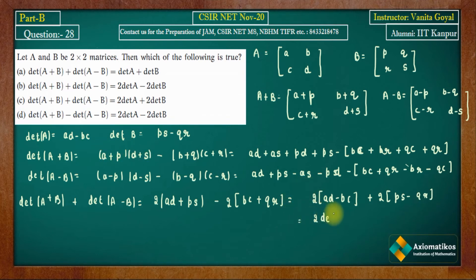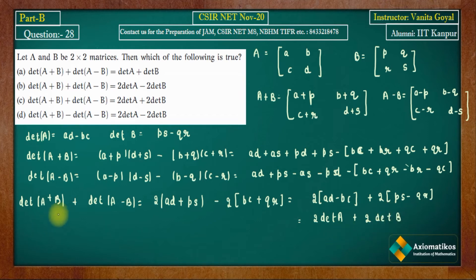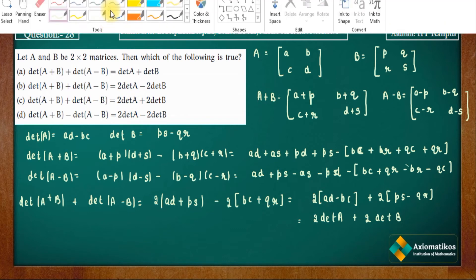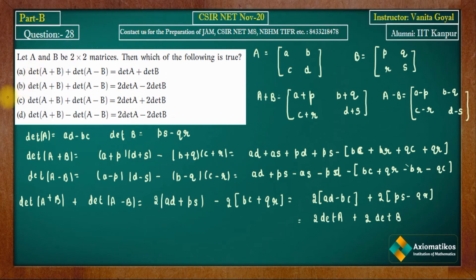Here ad−bc is det(A) and ps−qr is det(B). So det(A+B) + det(A−B) = 2·det(A) + 2·det(B). This means Option C is correct.